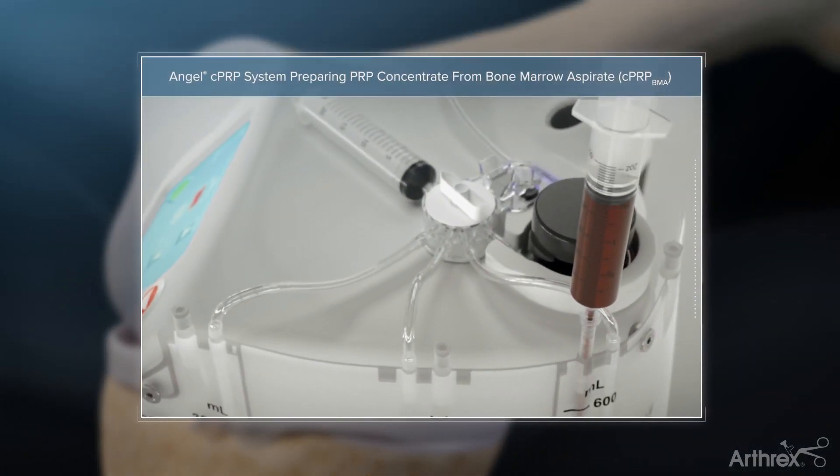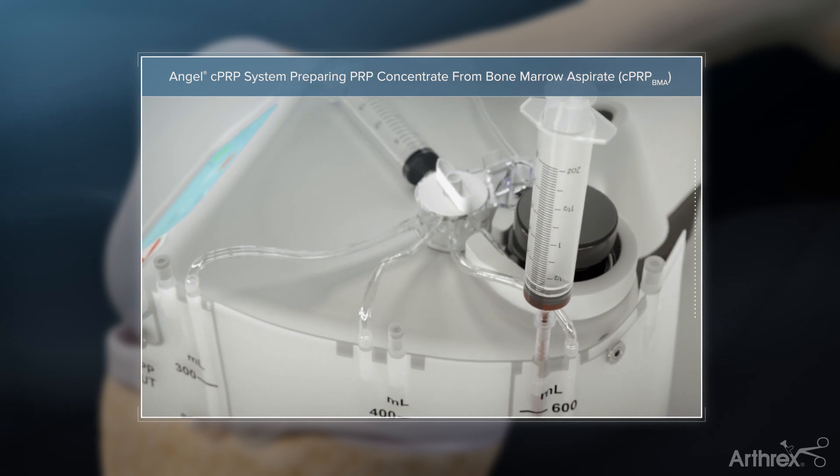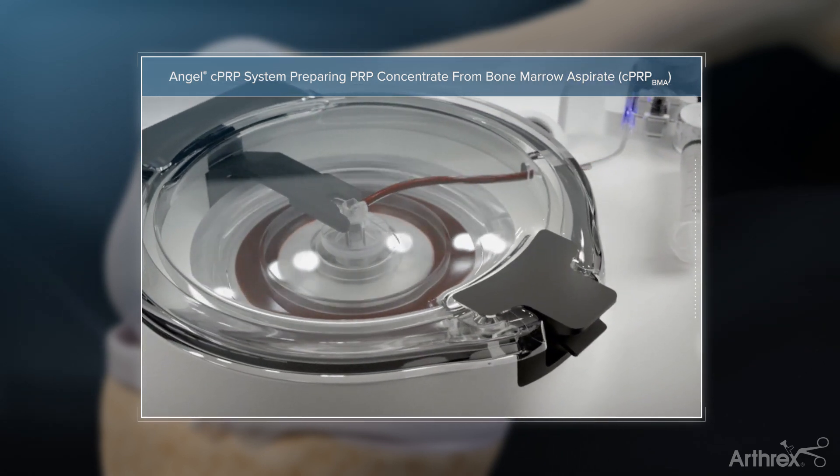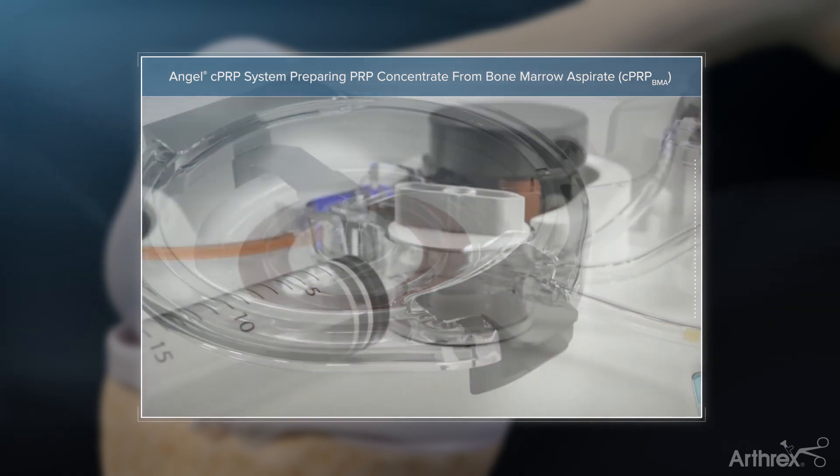Arthrex offers options for the treatment of these pathologies by performing a core decompression of the lesion and a direct application of concentrated bone marrow aspirate using the Arthrex Angel system.